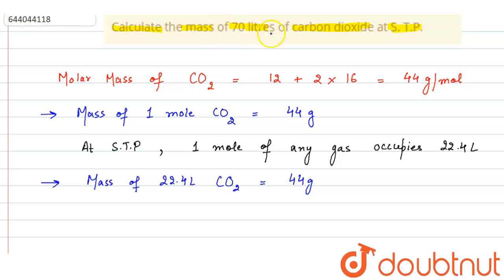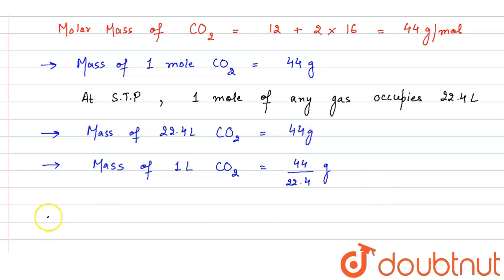Now we have to calculate the mass of 70 liters of carbon dioxide. Since the mass of 22.4 liter carbon dioxide is 44 grams, the mass of 1 liter carbon dioxide will be 44 by 22.4 grams.